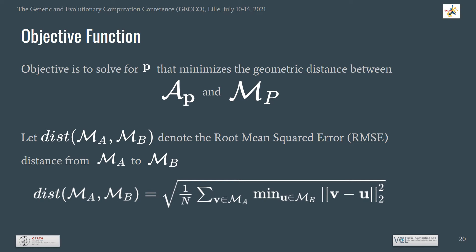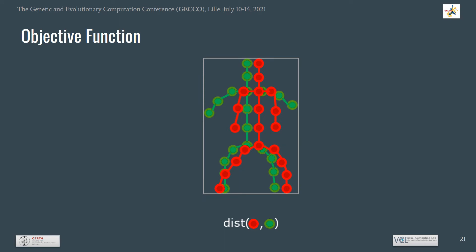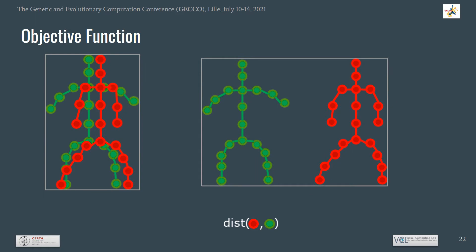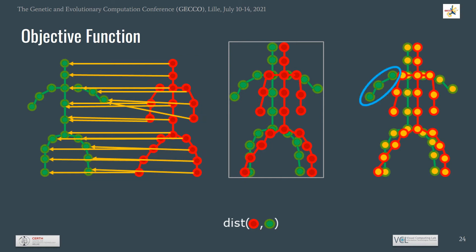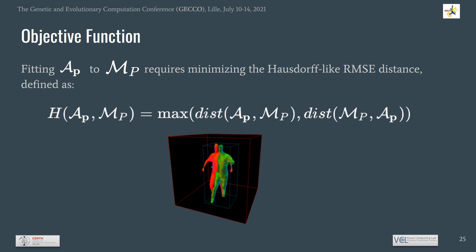We define the distance from mesh A to mesh B as the average distance between mesh A's vertices and their closest points in mesh B, in a root-mean-squared sense. Each vertex of the red mesh is associated with its closest vertex in the green mesh. While all red mesh vertices have an association with a vertex in green, the opposite is not necessarily true. Therefore, a Hausdorff-like distance metric is required which takes into account both the forward distance from red to green and the backward distance from green to red.